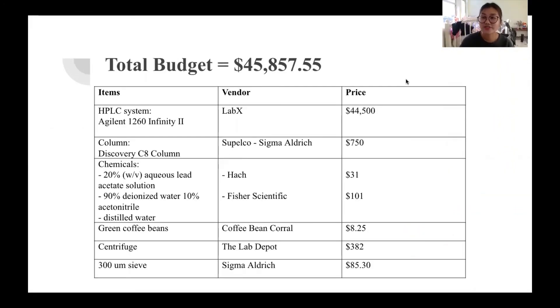So our total budget for this experiment is $45,857.55 and the things that are calculated into the budget are these items which are the HPLC system, the column, the chemicals, the three chemicals that we need, the green coffee beans, the centrifuge, and the 300 micrometer sieve. And then these are the vendors that we would purchase these items from. And lastly the last column is the prices that these items would be.